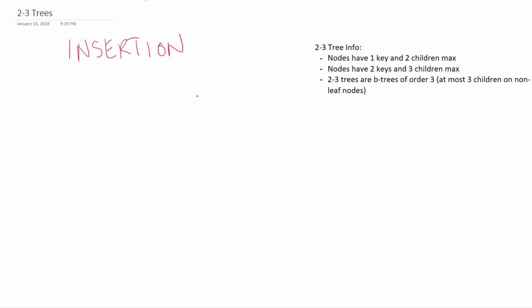Let's get started from scratch. Let's take 33 as our first number. Now we want to add numbers. Let's say 1, 33, and 67. Because the whole point of a 2-3 tree or any binary search tree is to be able to find these numbers easily. Our root node is going to be 33. 1 is less than 33, so we put it on the left subtree. 67 is more than 33, so it goes on the right subtree. So: more and less.